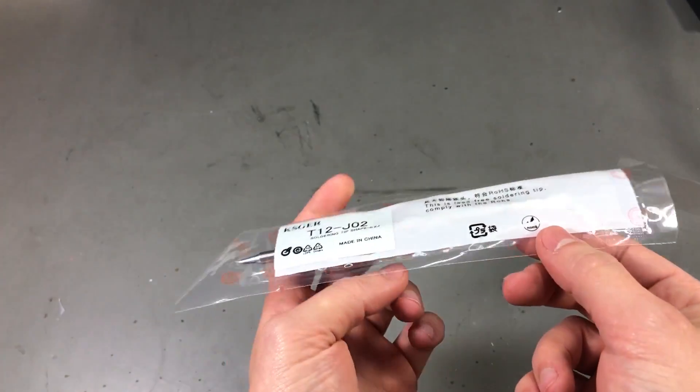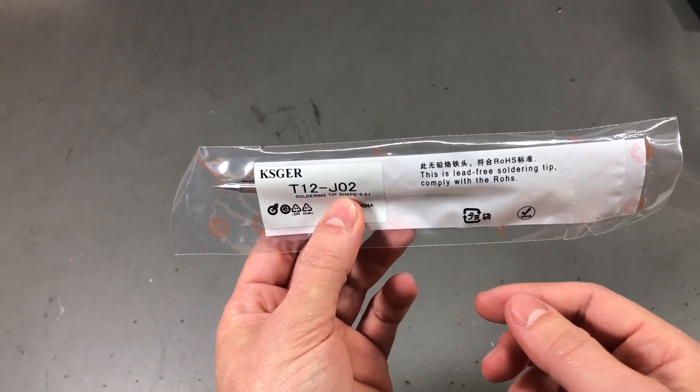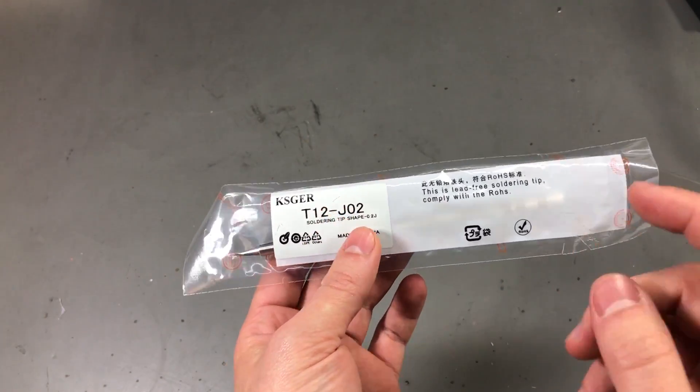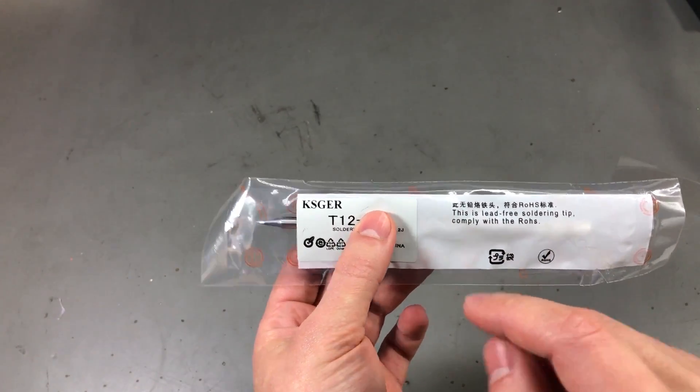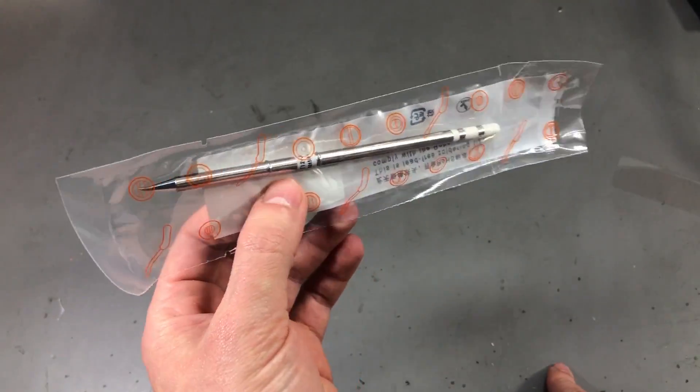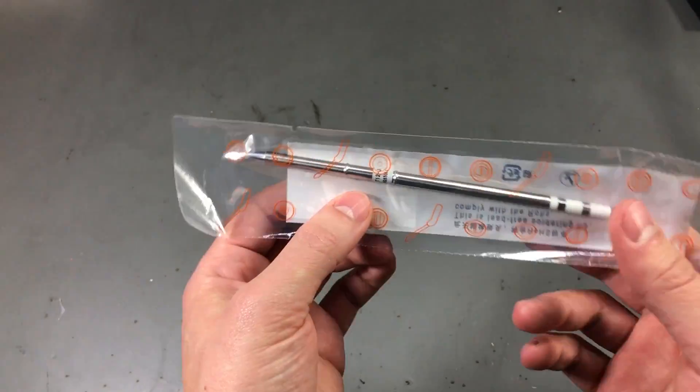So I got this T12 J02 replacement tip and I also got a genuine T15 J02 tip from a local Hakko distributor. Now the T12 vs T15 naming difference is because of the different region. In the EU and US I believe they sell the T15 while in Asia they sell as T12, but it should be the same product. So I will be comparing those two tips in a future video to see if there is any performance difference between one of these clones and the original Hakko tip.